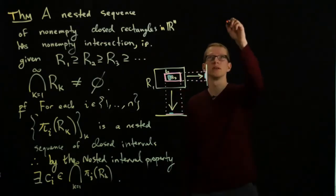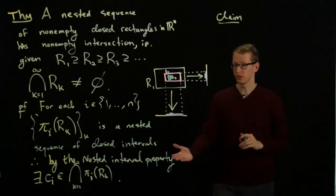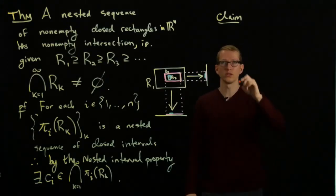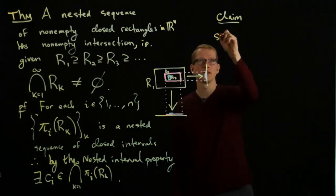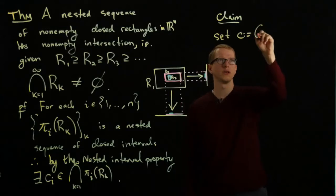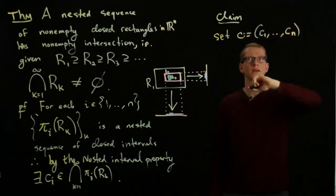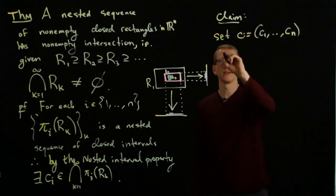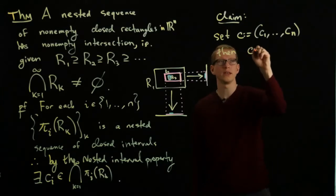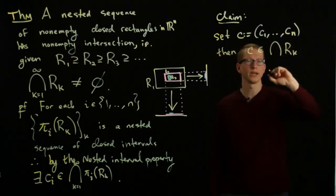Now we make the claim that since this is true for each i, we can take the associated element. The claim is: set c equal to (c1,...,cn), and this element is exactly in the intersection of all of these original rectangles.